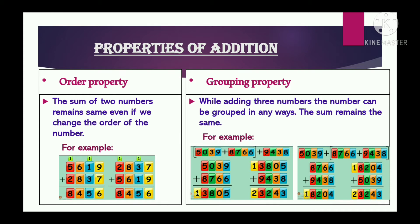Now let us see the second property which is grouping property. While adding three numbers, the numbers can be grouped in any way and the sum remains the same. Here I have taken two examples of the same numbers and the sum in both examples is the same. It does not change the sum even if we change the grouping while adding three numbers. Remember: we always add the numbers in brackets first.